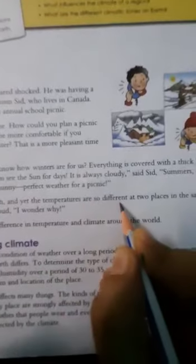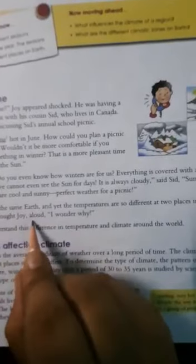We share the same earth and yet the temperatures are so different in two places in the same month, thought Joy aloud. I wondered why. So they are discussing about the picnic time. Sid is going to the picnic in the June month. So Joy said how can you go? Because it is too hot. Sid said no, it is comfortable in Canada, perfect weather for a picnic. So Joy was thinking, we are sharing the same earth and how are the temperatures so different.